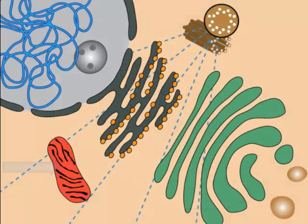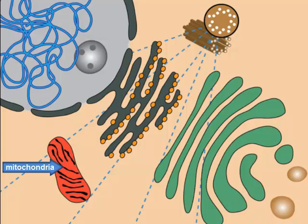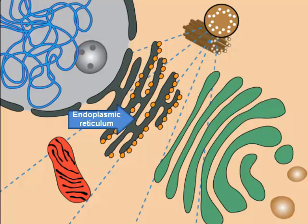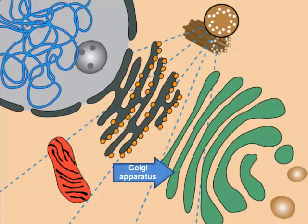Organelles include the mitochondria, which produce energy through the process of oxidation, the endoplasmic reticulum, the Golgi apparatus, and lysosomes, which degrade proteins targeted for recycling.